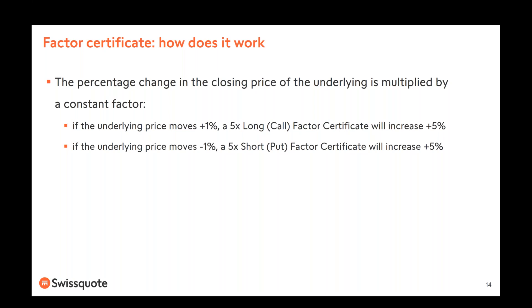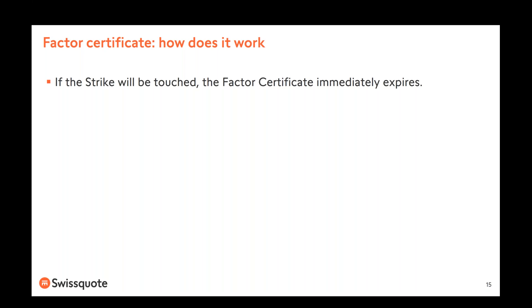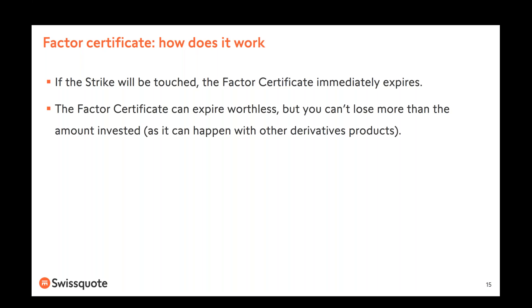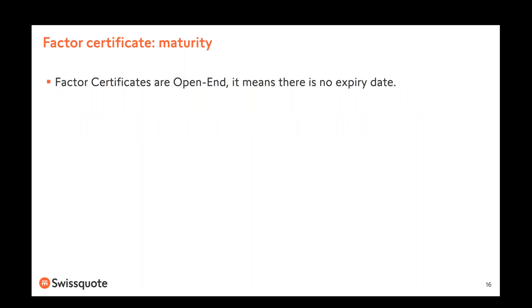If you select a long factor certificate and the market decreases one percent, you will lose five percent. If you select a short factor certificate and the market moves against you — in this case moves up — you will also lose five percent. Five is just an example; in the term sheet of the single product you always see the leverage. If the strike price of the factor certificate is touched, the factor certificate expires. You can never lose more than the amount invested.